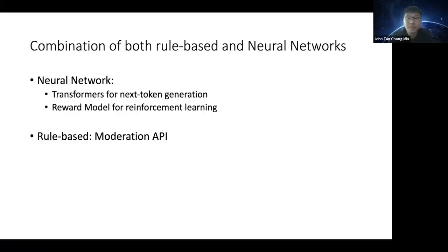The reward function is for the output of the prompts. You learn the reward function, and then you basically align your model such that the model generates outputs of a higher reward. This part is actually using reinforcement learning. Whether or not it is necessary we can discuss later, but it's definitely an interesting idea how you use reward modeling to align to human intentions.